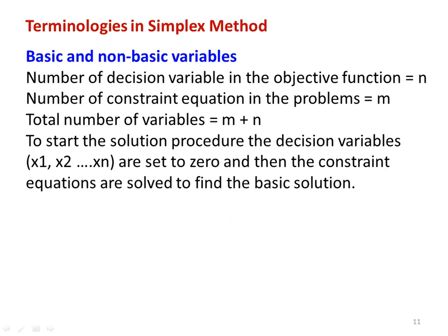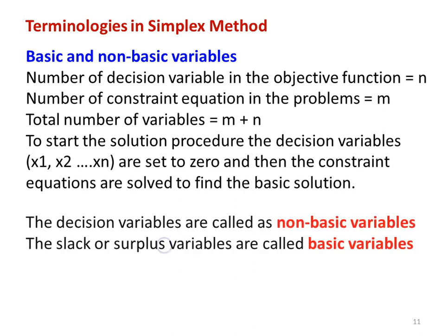The various terminologies. First, basic and non-basic variables. Let the number of decision variables in the objective function equal n and the number of constraint equations equal m. Each constraint equation will have one slack or surplus variable, so total variables = m + n. To start the solution procedure, the decision variables x1, x2, x3 are set to 0 and the constraint equations are solved to find the basic solution. The decision variables are called non-basic variables, and the slack or surplus variables are called basic variables.